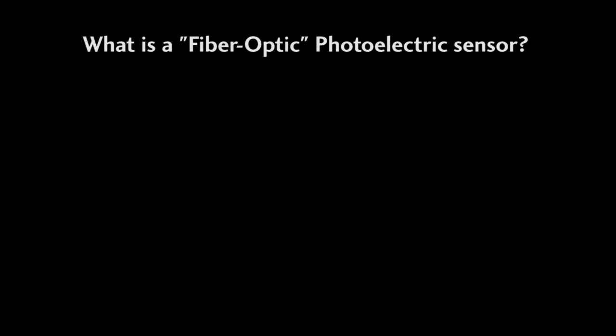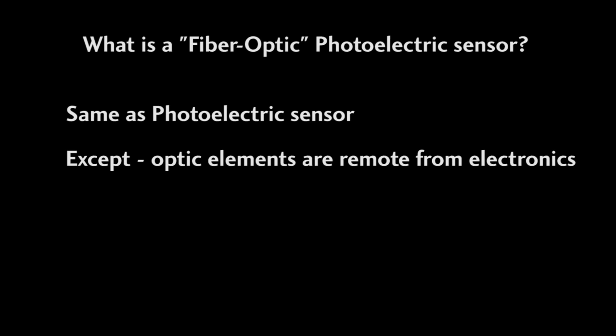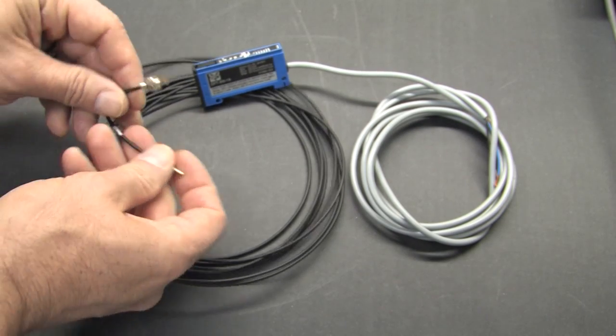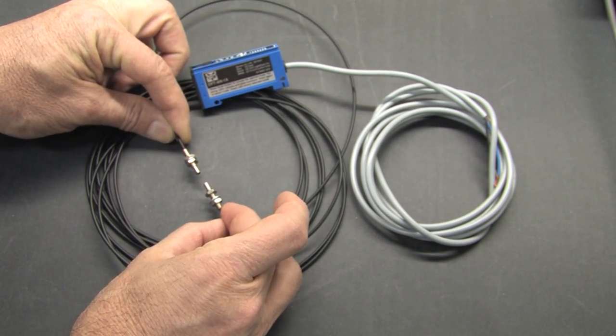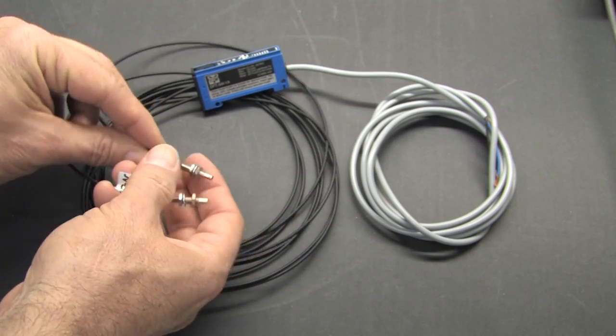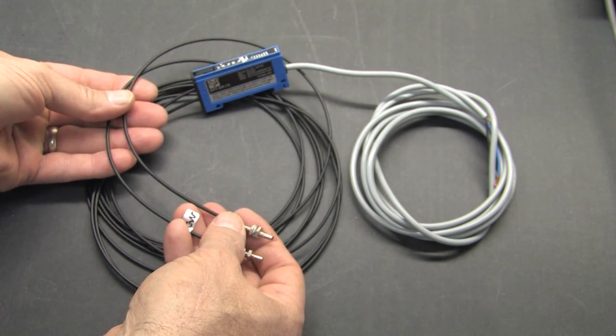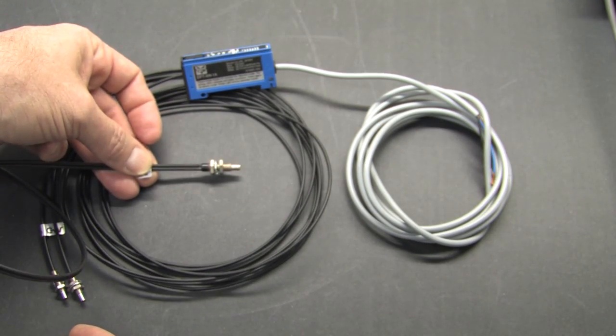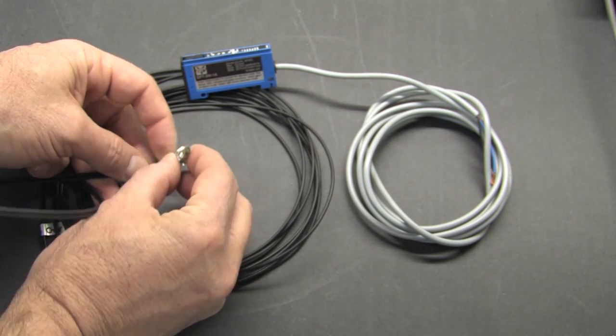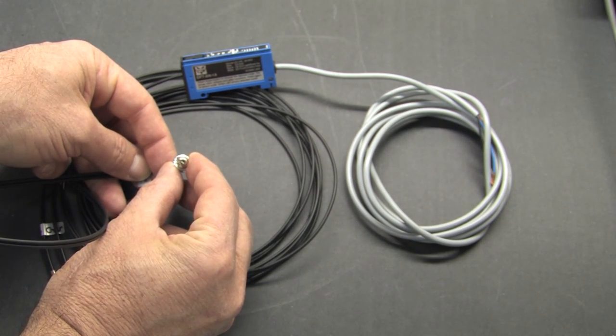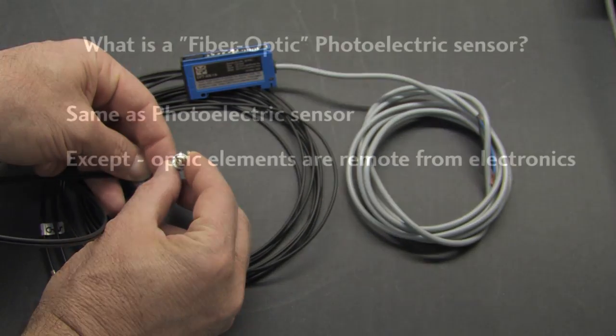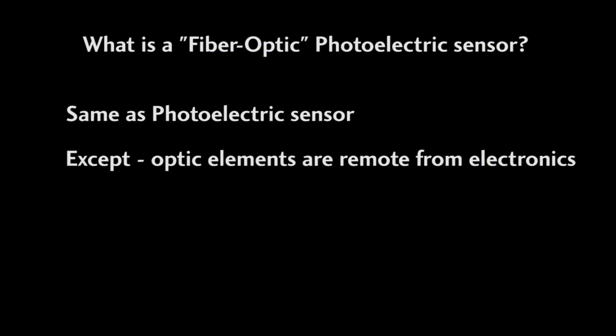Fiber optic photoelectric sensors are basically the same animal as regular photoelectric sensors. The main difference is the optics are separate from the electronics. In this through beam sensor example, you can see the two optics heads which feed back to the sensor electronics through these fiber optic cables. Here is a reflective sensor head where both optics are in one head. Again, it's the same photoelectric sensor, the optics have simply been remoted from the electronics.